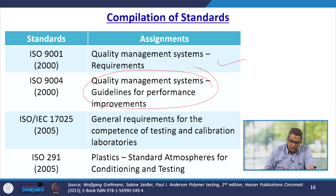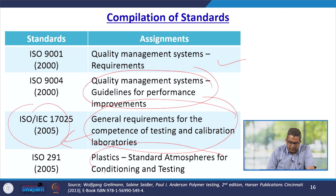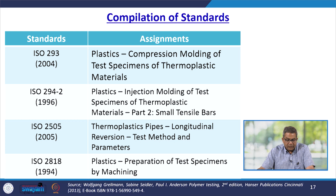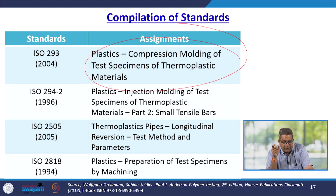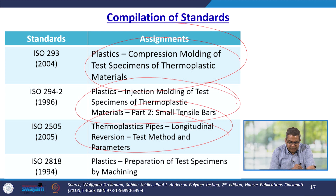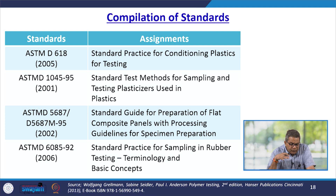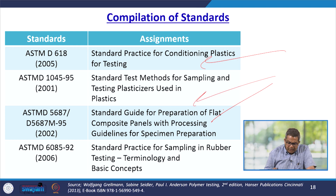Apart from this, the general requirements for the competency of testing and calibration laboratories are given by ISO standard ISO 291, which is applicable for plastics — standard atmosphere for conditioning and testing. Other ISO standards cover compression molding for test specimens of thermoplastic materials, injection molding of test specimens for thermoplastic materials, thermoplastic pipes, and preparation of test specimens by machining. Various ASTM standards cover standard practice for conditioning plastics for testing, sampling and testing plasticizers used in plastics, preparation of flat composite panels with processing guidelines, and sampling of rubber and testing terminology.